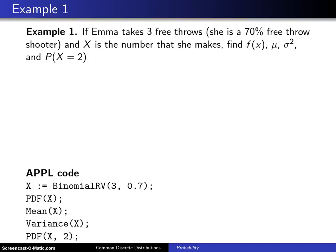This is the first in a series of examples concerning the binomial distribution. If Emma takes three free throws, and we assume she is a 70% free throw shooter, and x is the number of free throws that she makes out of those three free throws,